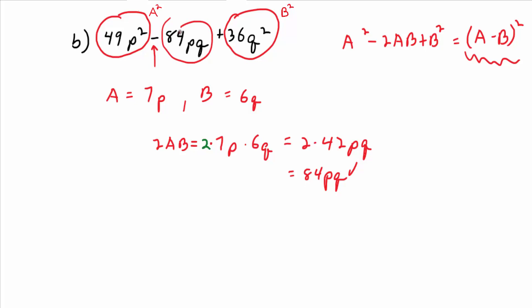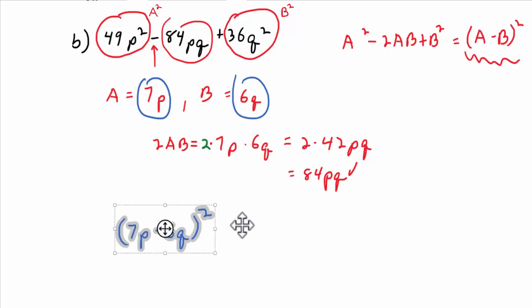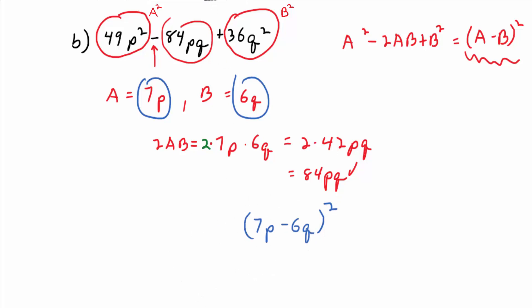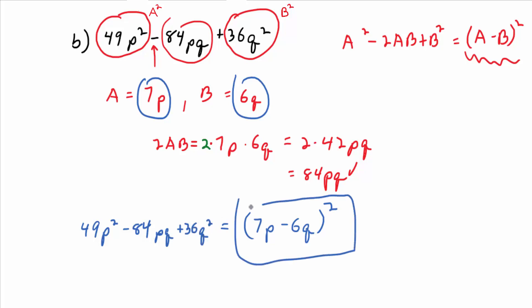You have to check the 2ab to be sure. Then the factorization is just (a − b)²: with a = 7p and b = 6q, the answer is (7p − 6q)². So 49p² − 84pq + 36q² factors to be (7p − 6q)². You could multiply it back out using the related multiplication formula a² − 2ab + b² to check — it works.